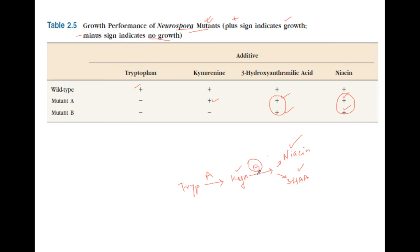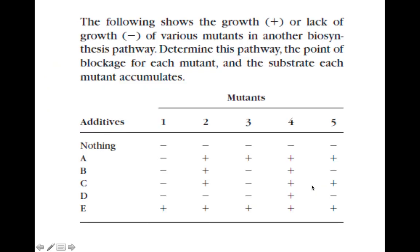The basic concept is: the compound with the most plus signs — meaning the most mutants that can grow when it's provided — is last in the pathway. You go from least plus to most plus to determine pathway order. The best way to practice is to pause the video now and try the next example yourself before we do it together.